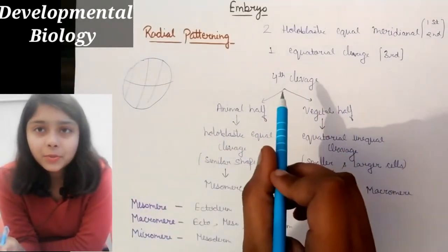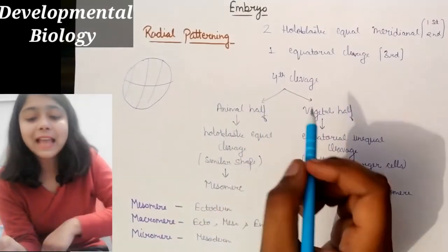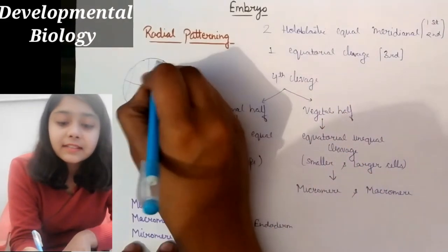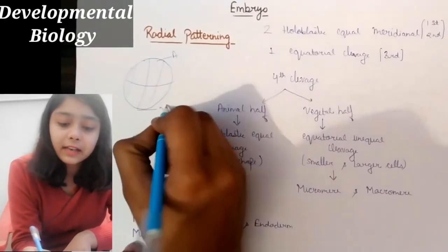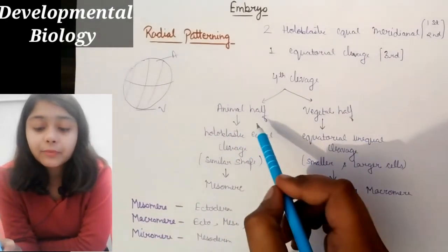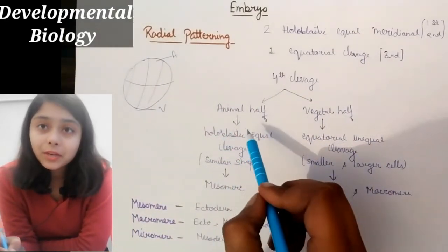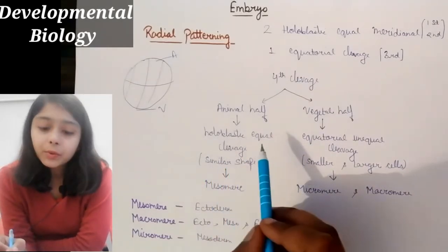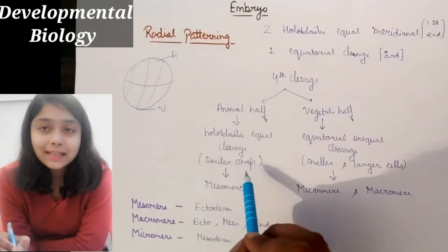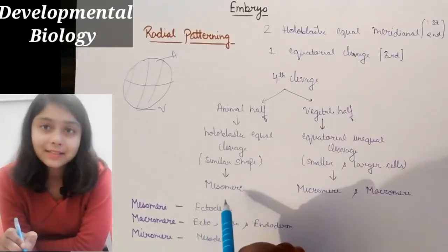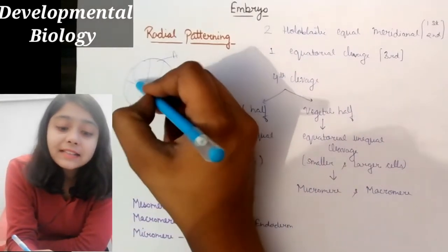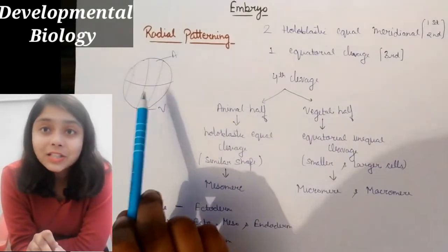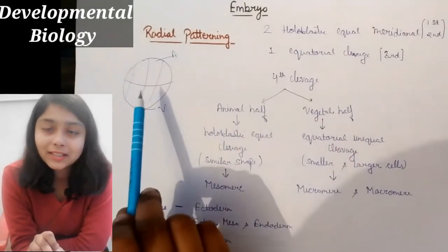Now what is the fourth cleavage? The fourth cleavage is different in the animal half and the vegetal half. In the animal half, the cleavage is holoblastic and equal. The cells that come from this cleavage are similar in shape and size — we call them mesomere cells.